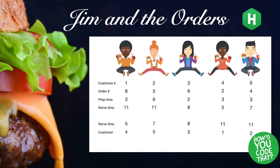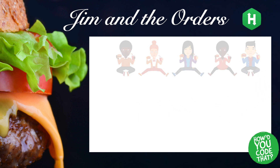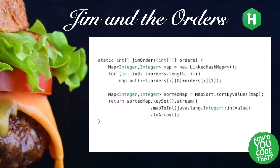Now, for the solution to this challenge. First, because we need to keep track of the order in which each customer is added to our queue, we instantiate a LinkedHashMap and assign it to the variable map.